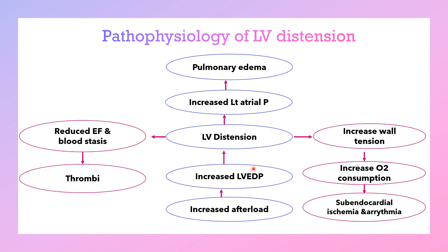Left ventricular distension will increase wall tension and oxygen consumption, leading to subendocardial ischemia and arrhythmia. Left ventricular distension will also reduce ejection fraction, lead to blood stasis, and lead to thrombosis and showering.